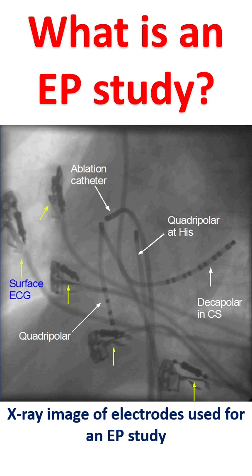These further divide into minute conduction fibers known as Purkinje fibers, which reach each and every heart muscle cell. Thus, the heart is able to work in a regular sequence by the control of the electrical system of the heart.